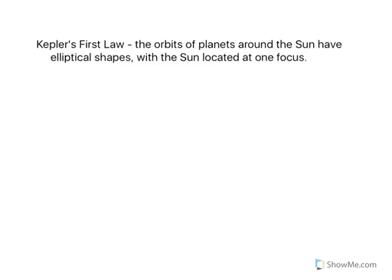In this segment, we're going to look at Kepler's three laws. Kepler's first law tells us that the orbits of planets around the sun have elliptical shapes, with the sun located at one focus.